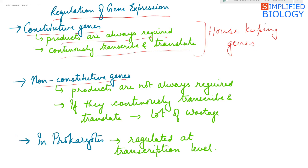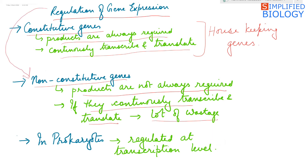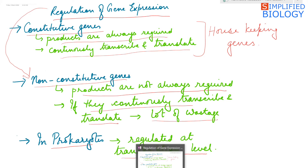The non-constitutive genes are those genes whose products are not always required by the cell. So if these genes continuously transcribe and translate, there will be a lot of wastage. Regulation of expression of such genes is a must, and in prokaryotes these genes are regulated at the transcription level — that is, during the formation of RNA from DNA.